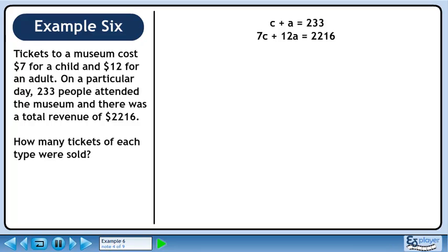Now we'll use elimination to solve for each variable. Multiply the first equation by 7. The C terms now have the same coefficient.